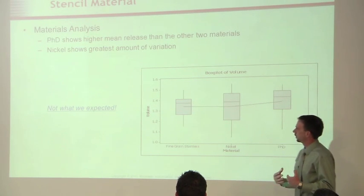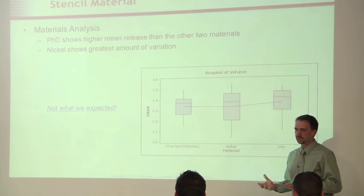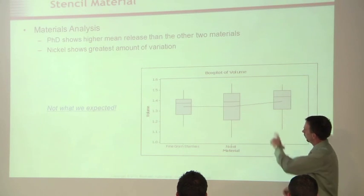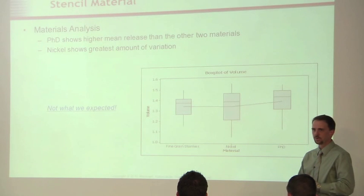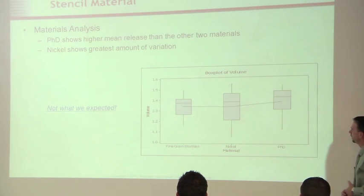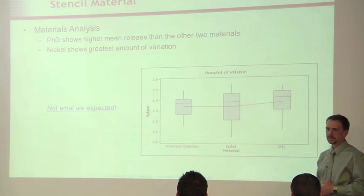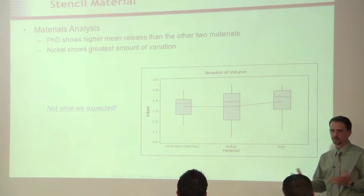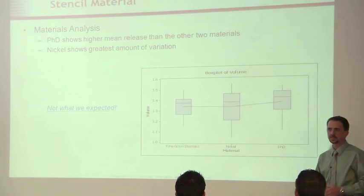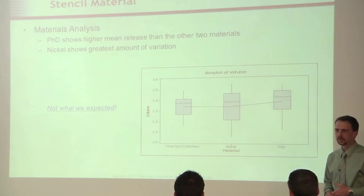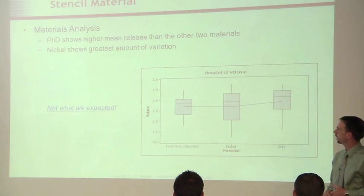We looked at the actual output of the solder paste inspection. This is a box plot of the data — it gives you an idea of where the mean transfer efficiency is, but also the spread of the data. The taller those boxes are, the more spread you have in the data, the more noisy that data is. What we saw was a little bit unexpected. The PHD material actually released better than the nickel or the fine grain from the mean standpoint. And what was even more unexpected was the nickel material, which is supposed to be the cure-all and the best case — not only did it have a smaller mean than the PHD, but the spread in the data was a lot wider, meaning a lot more variability in that print. So it's not exactly what we expected — it didn't really support our hypothesis.